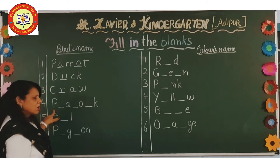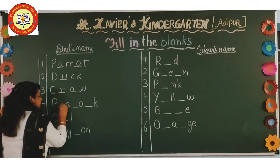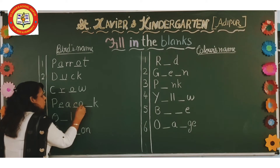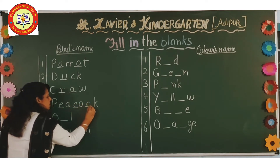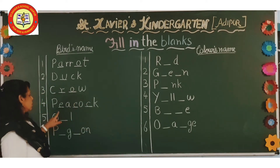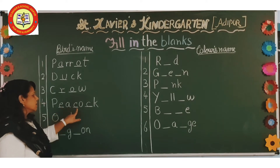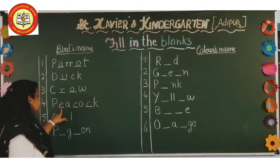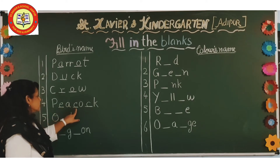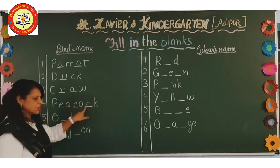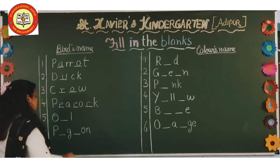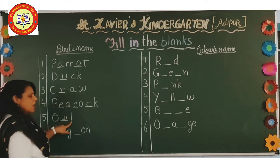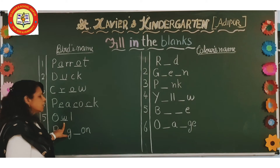Then peacock. P-E-A-C-O-C-K, peacock. So we have to fill here E, C and here also C. Then owl. O-W-L, owl. So we have to fill here W.